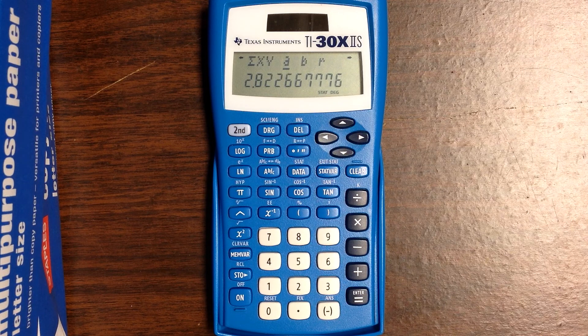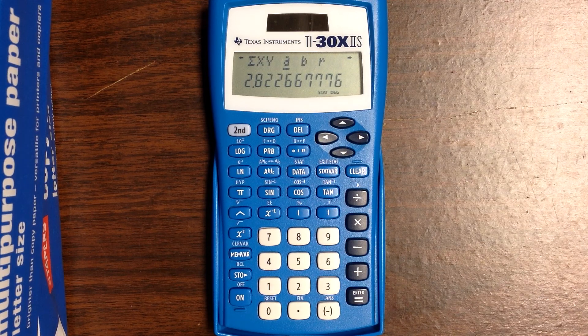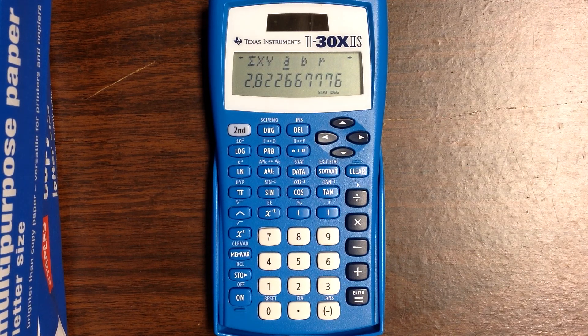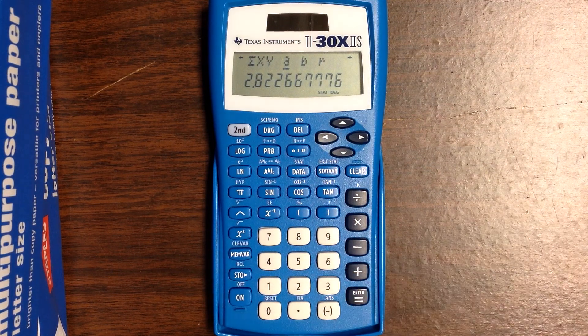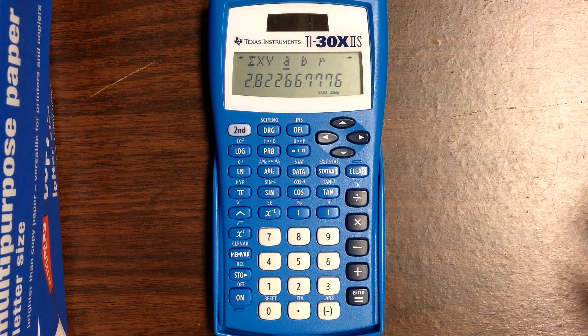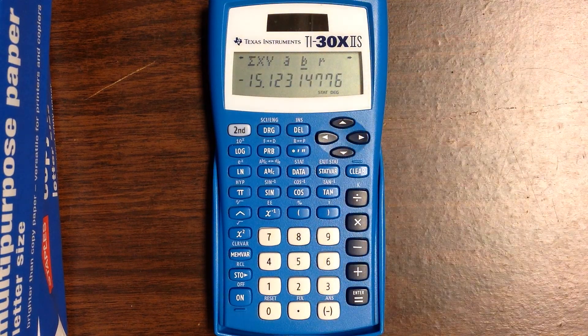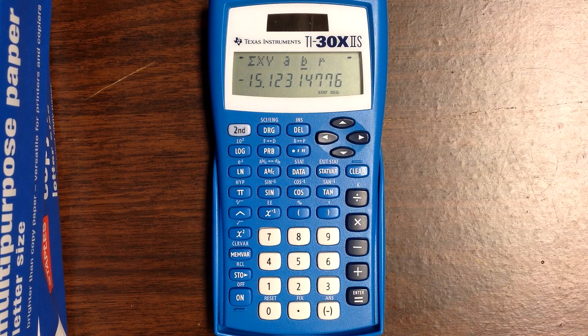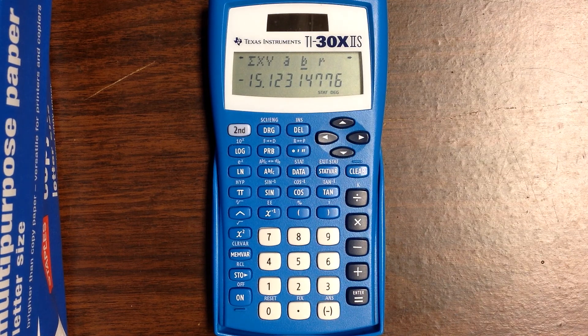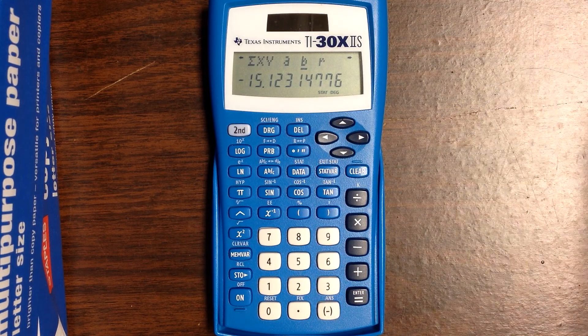For every increase of 1 million households with a VCR, we predict that an additional 2.823 million VHS tapes will be sold. On the TI-30, A refers to the slope of the line. B refers to the intercept, which means if there were zero VCR-owning households, we would have negative 15 million tapes sold, which obviously doesn't make sense.